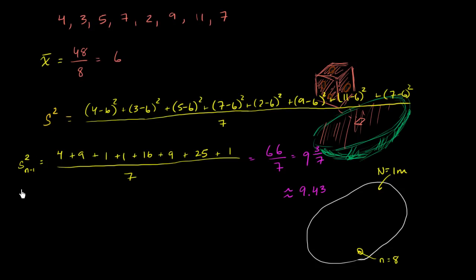Well, how could we calculate a sample standard deviation? We want to somehow get at an estimate of what the population standard deviation might be. Well, the logic should, I guess, is reasonable to say, well, this is our unbiased sample variance. It's our best estimate of what the true population variance is.